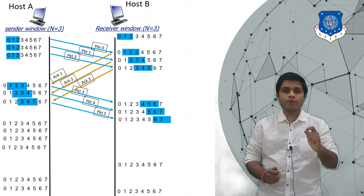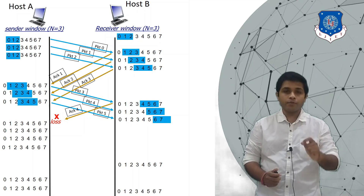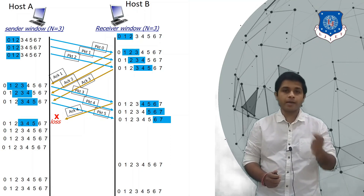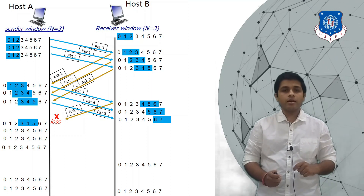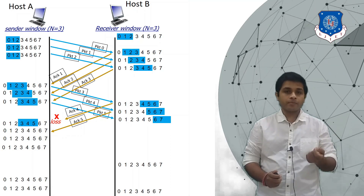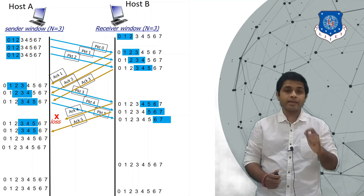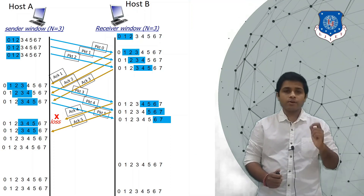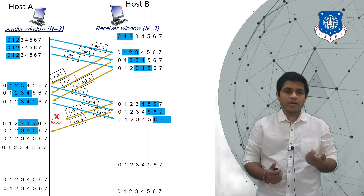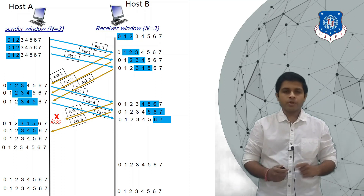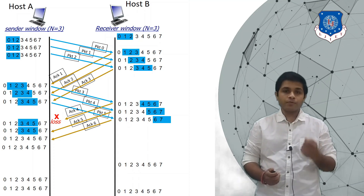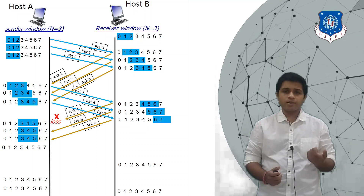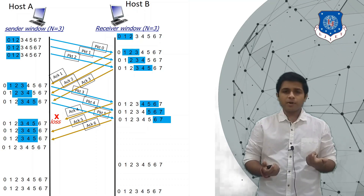Now B sends ACK 4 for packet 3, but suppose that ACK 4 is lost in the channel. A's window will not move because it is expecting acknowledgement for packet 3. After some time A receives ACK 5 for packet 4. A is still expecting acknowledgement for packet 3 but is getting ACK 5. When A receives ACK 5, it thinks packet 4 was delivered successfully but doesn't know what happened to packet 3. A waits more and then receives ACK 6 — it thinks packet 5 was also delivered successfully, but still doesn't know what happened to packet 3.